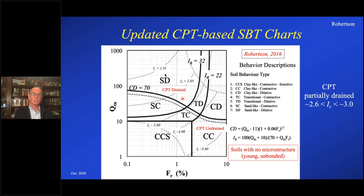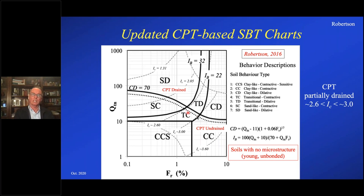This chart is for soils with little or no microstructure — essentially young, unbonded soils. It's important to note that in the sand-like region, the CPT penetration process is primarily drained, so there are no excess pore pressures during penetration. In the clay-like region, the CPT is typically undrained during penetration, so you get excess pore pressures. For clay-like contractive and clay-like contractive-sensitive, you can get quite large excess pore pressures, whereas in the clay-like dilative region, it's often a negative pore pressure due to the dilatancy. That transition zone is roughly an Ic of about 2.3 to 2.6, where it transitions from drained penetration to undrained.